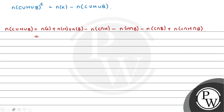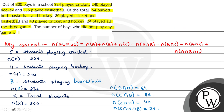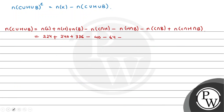Substituting the values: n(C) = 224, n(H) = 240, n(B) = 336, n(C∩H) = 40, n(H∩B) = 64, n(C∩B) = 80, and n(C∩H∩B) = 24.